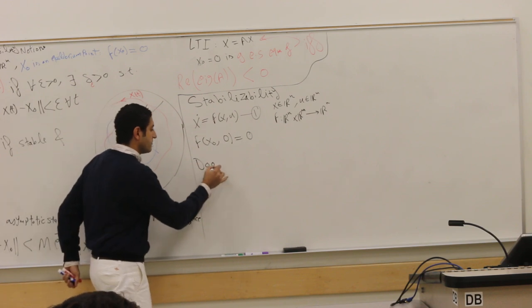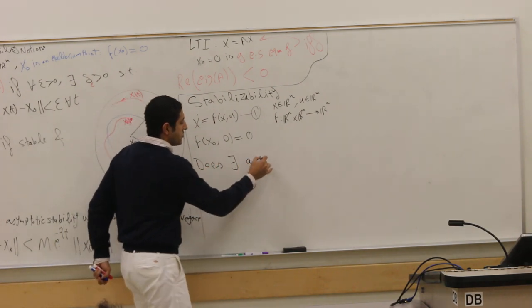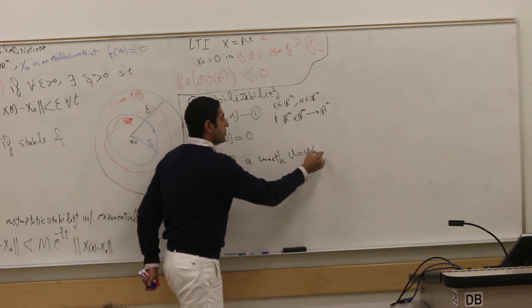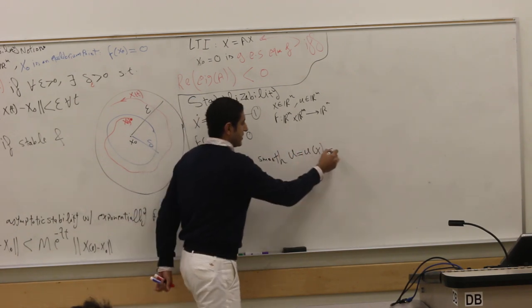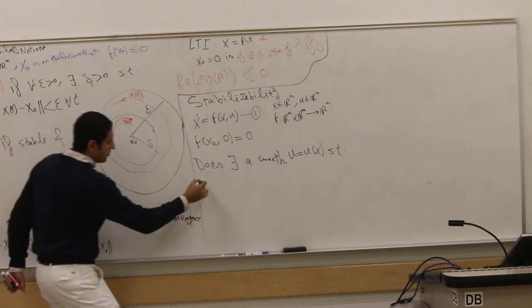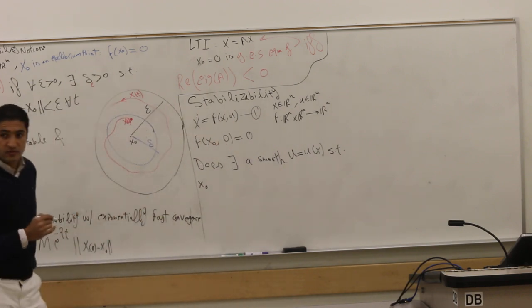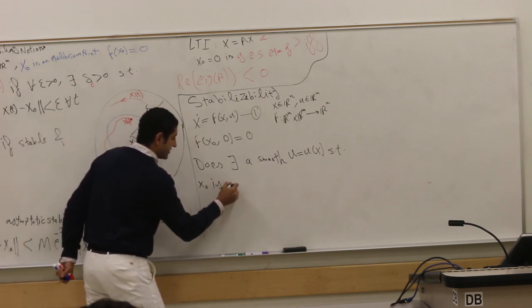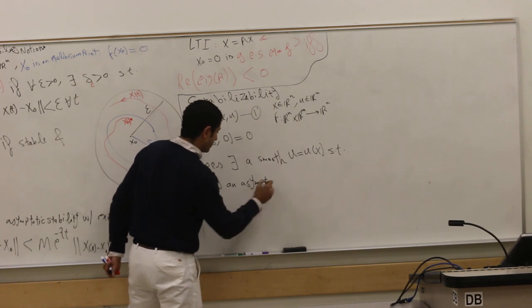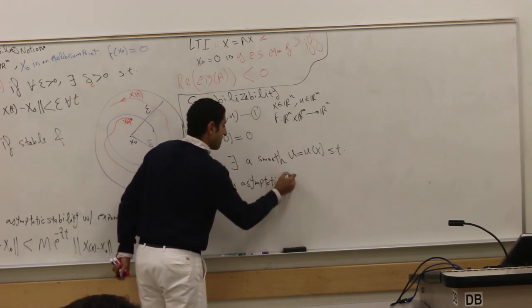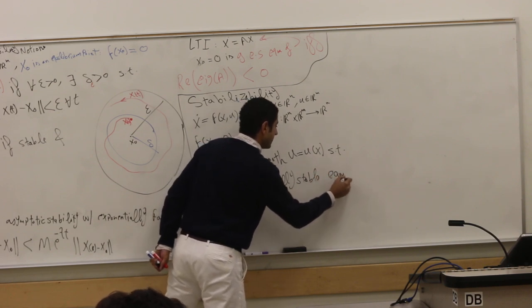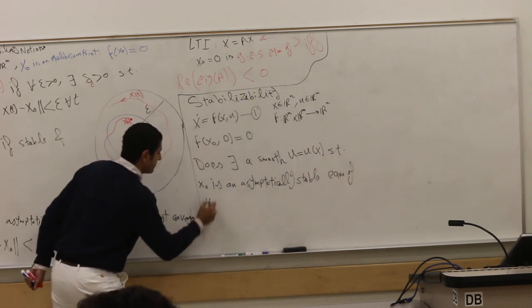So does there exist a smooth feedback control law, so u is a function of x, such that x_0, this equilibrium that you want to stabilize, is an asymptotically stable equilibrium, which we define rigorously, asymptotically, right?